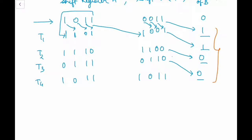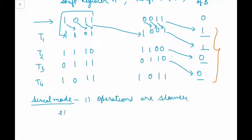In parallel mode, information is available from all bits of the register, and all bits can be transferred simultaneously during one clock pulse. A digital computer can operate in serial mode, parallel mode, or a combination of both. Serial mode operation is slower because of the time it takes to transfer information in and out, but serial mode requires less hardware to perform operations.